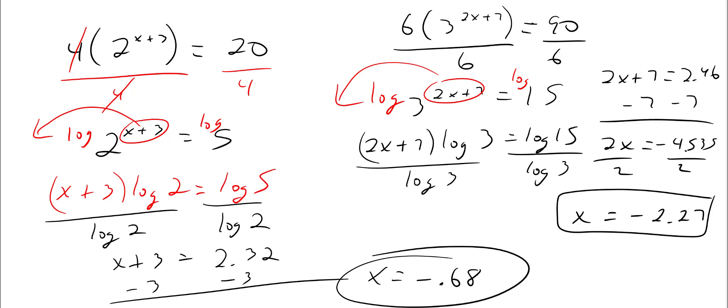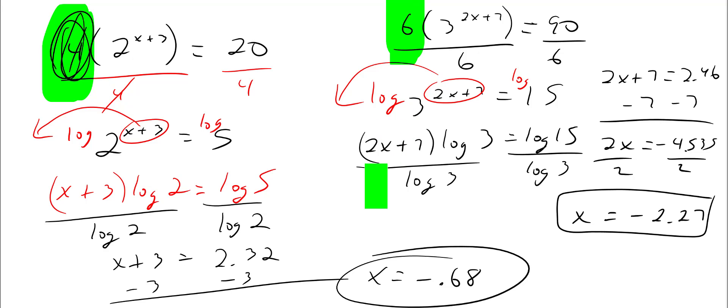So to summarize: if you have a log on one side, convert to exponential form. If logs are on both sides, just set the arguments equal to each other. If you start with no logs, take the log of both sides — but if there's a coefficient in front, divide both sides by it first, then take the log of both sides. Have an outstanding day. Adios!